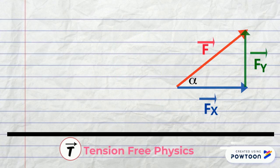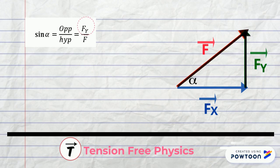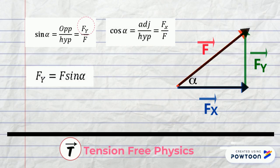In this triangle, sine alpha equals opposite over hypotenuse equals fy over f. So fy equals f sine alpha. Cosine alpha equals adjacent over hypotenuse equals fx over f. So fx equals f cosine alpha.